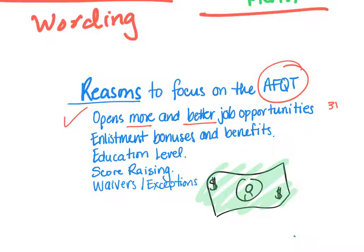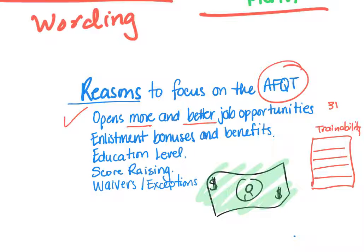For example, the Army's entrance score is 31, but they have a table where they check your trainability based on your score. Keep in mind these branches invest over $50,000 per enlisted person to train you, so they want to make sure their investment is worth it. Scoring at a 31 is average — we don't want average, we want above average, excellent, outstanding. Shoot for 30 points above the minimum. If you have a GED, you'll likely need to score over 50, so talk to your recruiter about specific requirements.